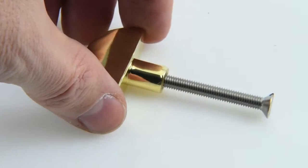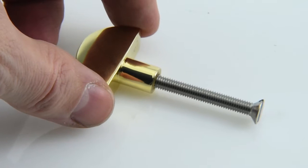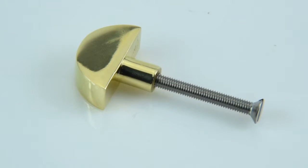All British made in Willenhall in the West Midlands to a really high standard as well. So that's the Croft Half Moon Cupboard knob.